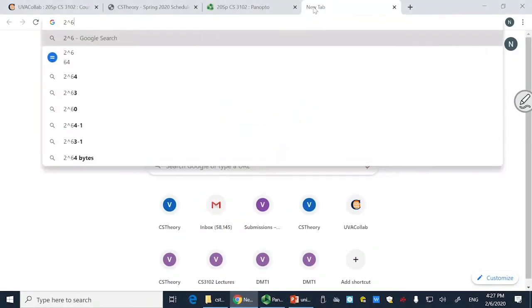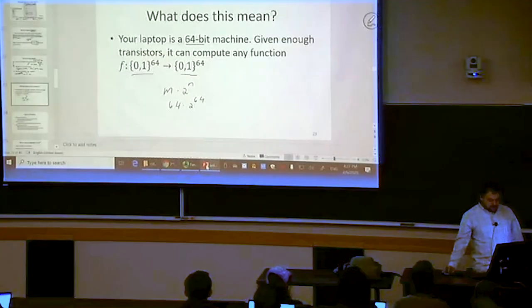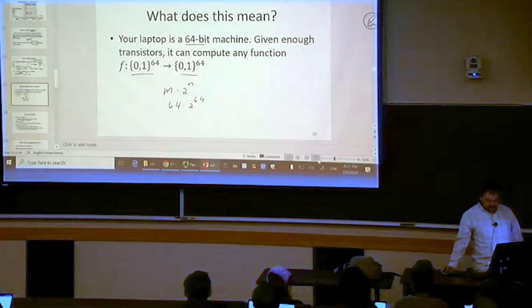So what is 2 to the 64? What is that? 1.8 times 10 to the 19? Yeah, that's a pretty big number. More transistors than you're actually going to be able to put on there.